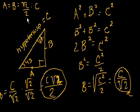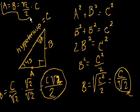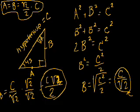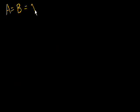You might want to memorize this formula, although you can always derive it using the Pythagorean theorem and the fact that the two non-hypotenuse sides of a 45-45-90 triangle are equal. But this is very good to know — for example, if you're taking the SAT and need to solve a problem quickly, knowing this lets you find a side given the hypotenuse, or find the hypotenuse given a side, very fast.